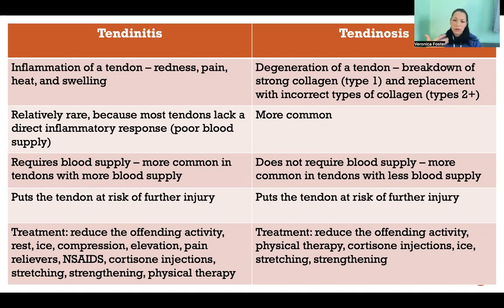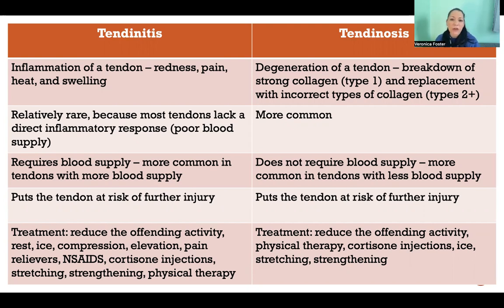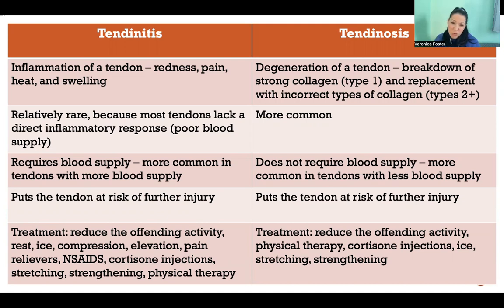We're always remodeling our tissues and replacing what's getting broken down with new materials to keep it new and fresh. But if you're overusing the tendon and it's breaking down faster than you can produce the correct type of collagen, then instead we replace that correct, strong, dense type of collagen with the wrong type that's faster and easier to make. That collagen is faster and easier to make, but it's also thinner and weaker — it's not really what we're supposed to use to make tendons.